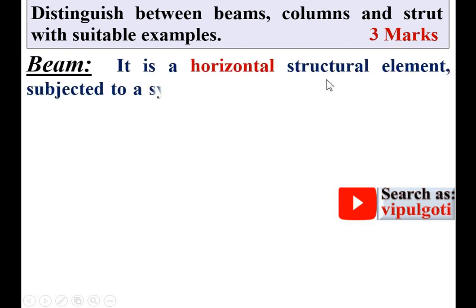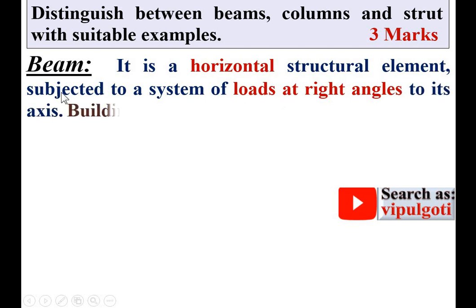Beam: it is a horizontal structural element subjected to a system of loads at right angles to its axis. Generally, the example for the beam is a building — there are so many beams in buildings. The beam is always a horizontal structural element, and the load on the beam is always at right angles to the axis of the beam.